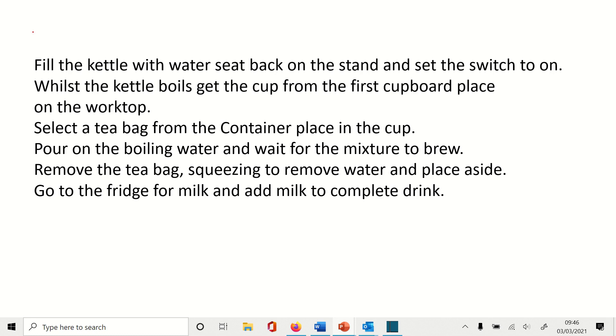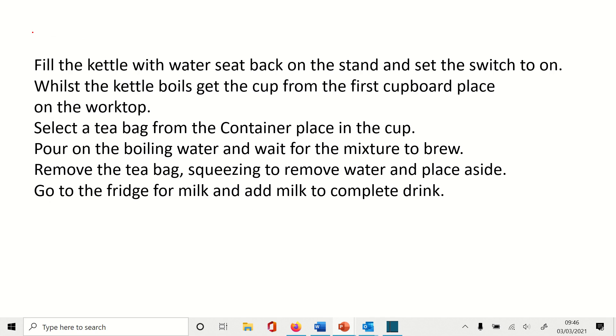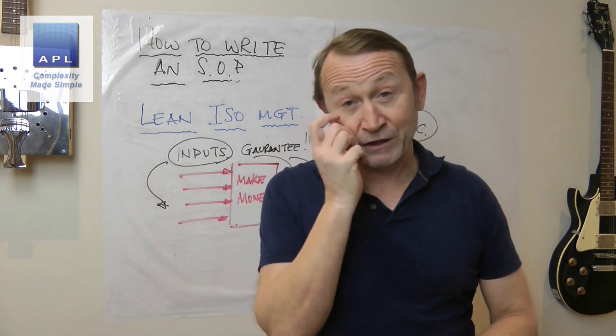Fill the kettle with water. Put the kettle back on the stand. Set the switch to on. Whilst the kettle boils, get the cup from the first cupboard and place it on the worktop. Select a tea bag from the container and place it in the cup. Pour on the boiling water. Wait for the mixture to brew. Remove the tea bag, squeeze it to remove the water, and place aside.